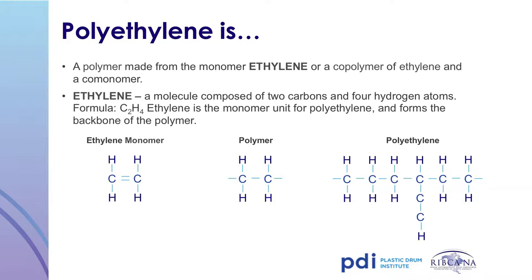What is ethylene? The ethylene chemical formula is C2H4, a simple monomer made from a multitude of sources. Ethylene can be derived from natural gas liquids or refining.